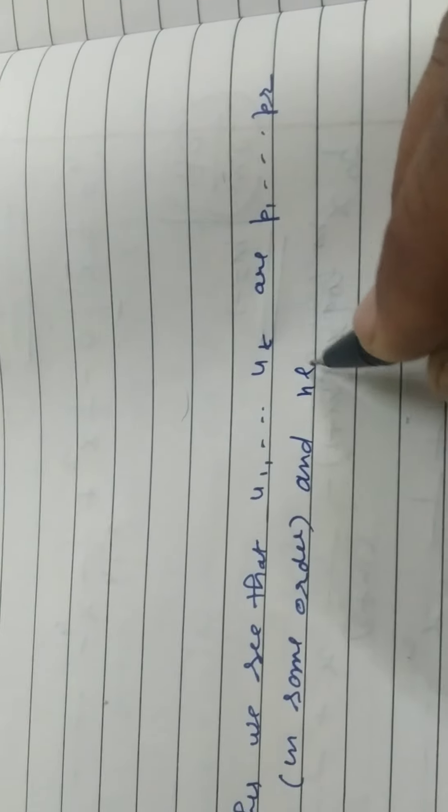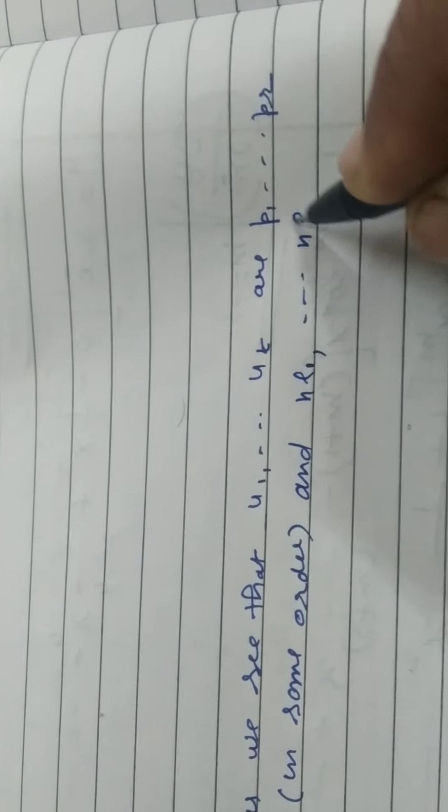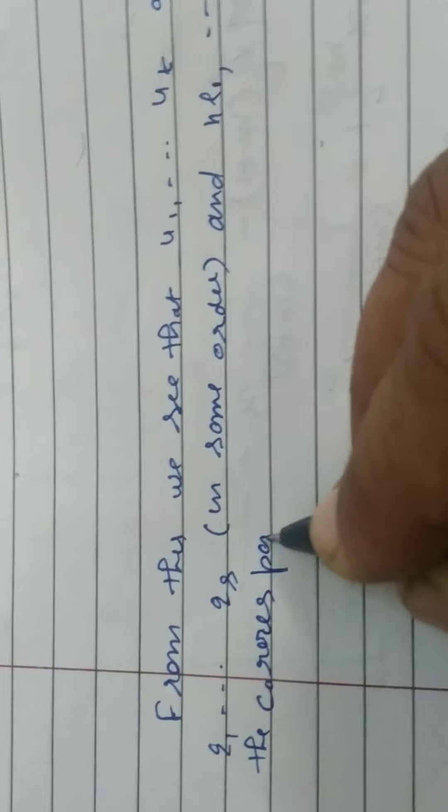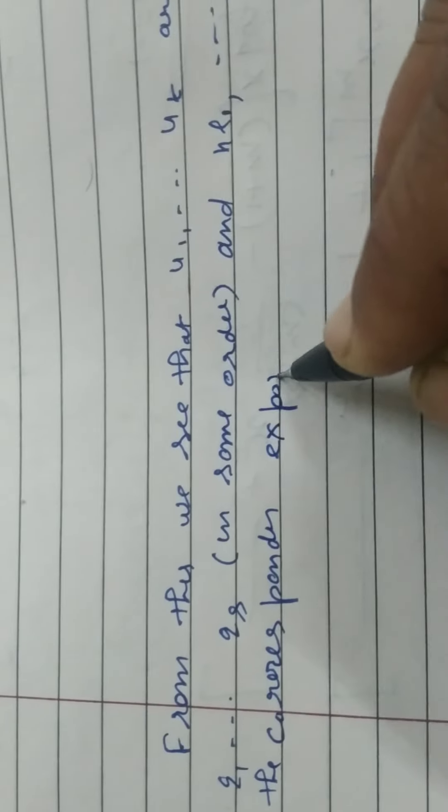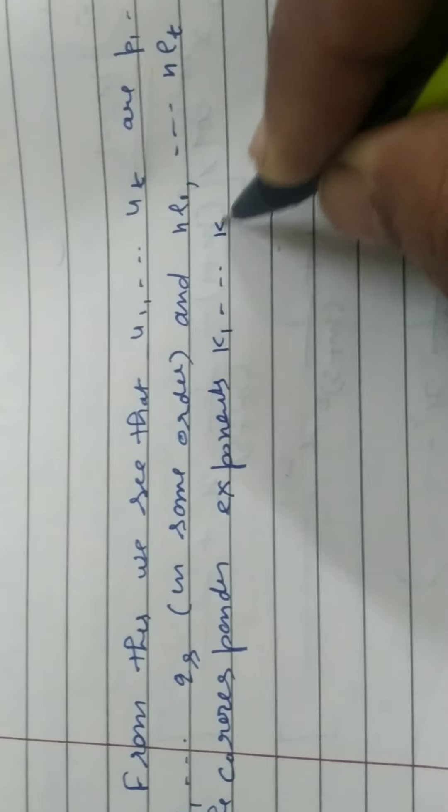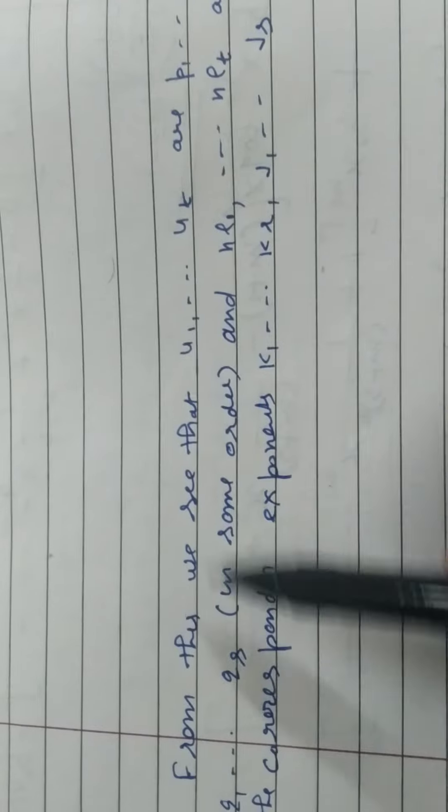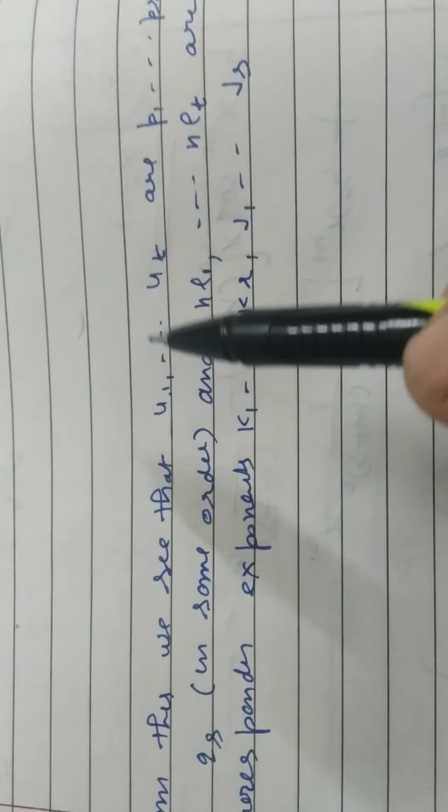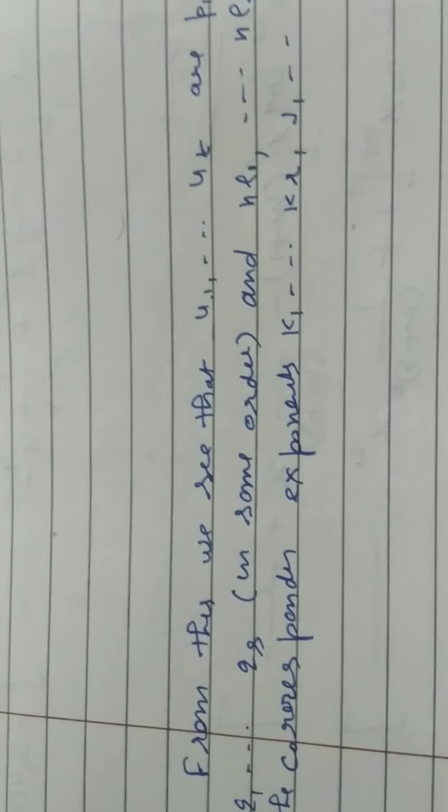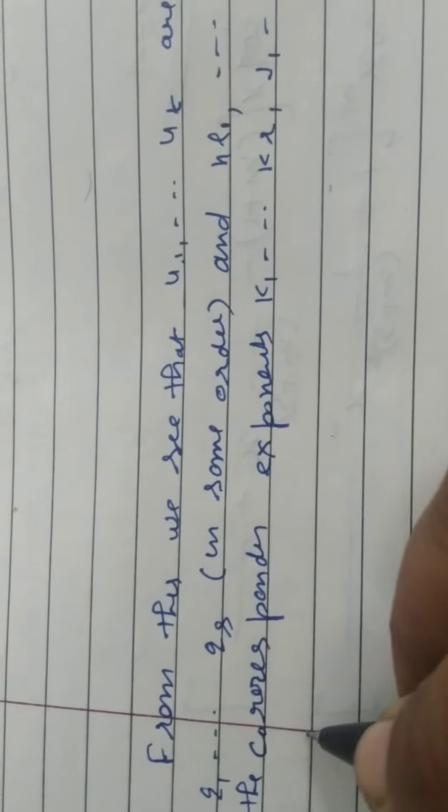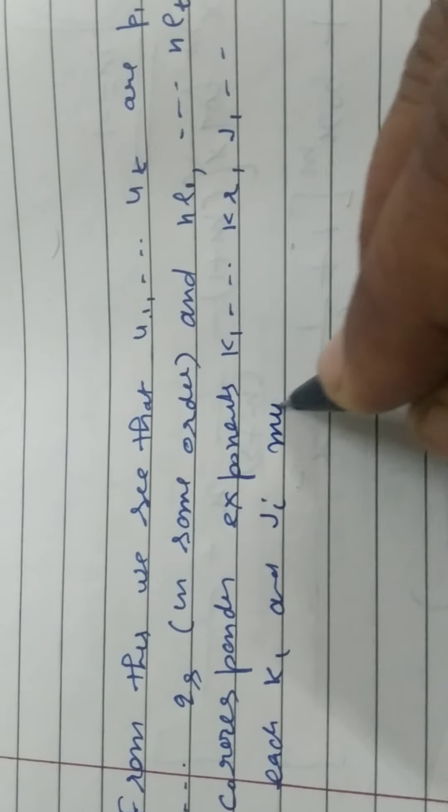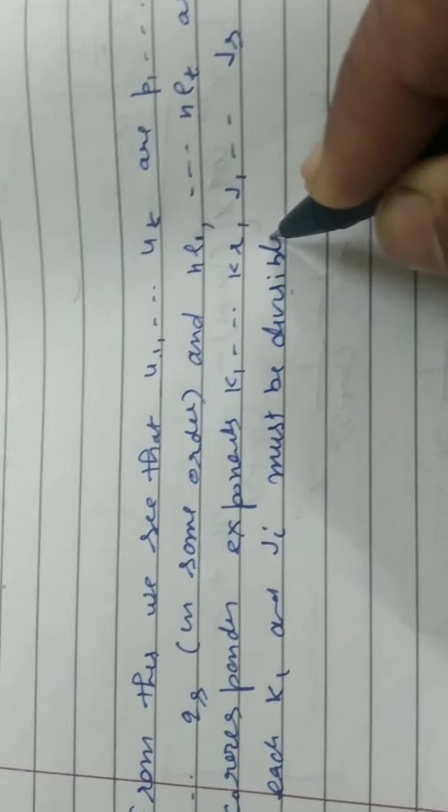And NL1 to NLT, जो की power थी UNS की, are the corresponding exponents K1 to KR, J1 to JS. इसका मतलब क्या है? यदि U1, PJ के equal हो गया, तो U1 की power जो है, NLJ वो KJ के equal हो जाएगी. ठीक है? यह conclusion क्या हुआ? Each KI and JI must be divisible by N.